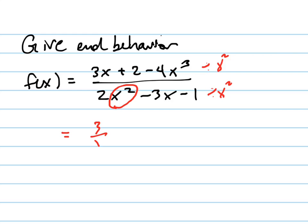And I will have, when I do that, I'll have 3 over x plus 2 over x squared, this is the numerator, minus 4x all over 2 minus 3 over x minus 1 over x squared.